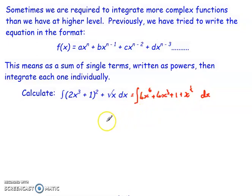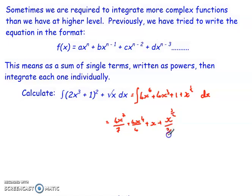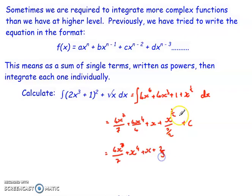I'd then integrate each term individually. So I'd end up with 4x to the power of 7 over 7, plus 4x to the power of 4 over 4, plus x, plus x to the power of 3 over 2 divided by 3 over 2, and then don't forget your plus c, your constant of integration. At this stage I'd simplify it — 4x to the power of 7 over 7, this term simplifies to plus x to the power of 4, then plus x, then plus 2 thirds x to the power of 3 over 2, or I could write that as the square root of x all cubed, plus c.